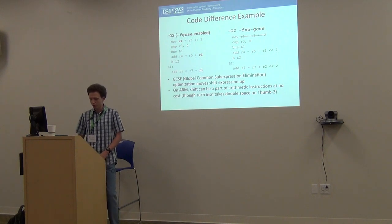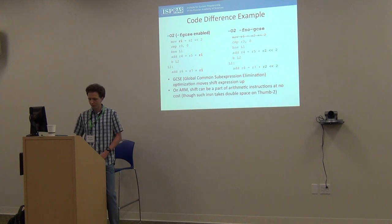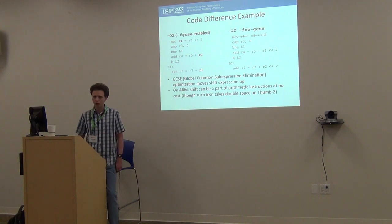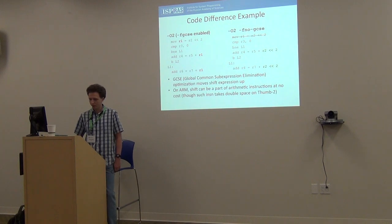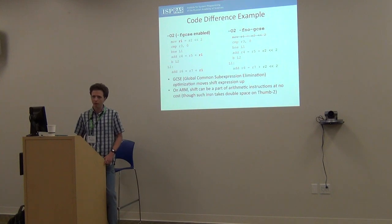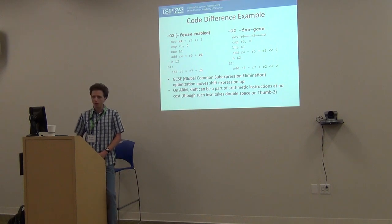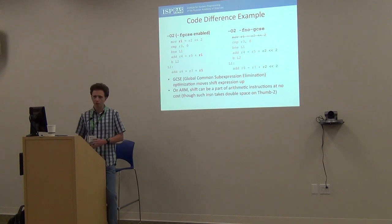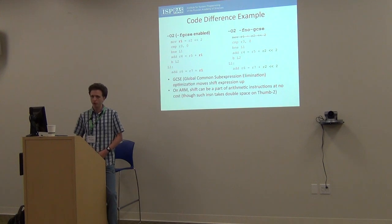For example, here is a code from Crafty found with our tool. With O2, GCSE takes a shift expression and hoists it up. It doesn't account for the barrel shifter in ARM, where you can have a shift expression in the same arithmetic instruction — a shift for free. So if you disable GCSE, it works better. When you see this code you can fix it. Our tool is about finding such test cases in your application and quickly fixing them.